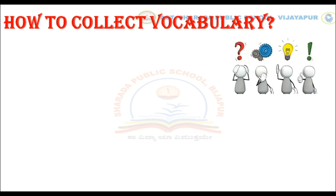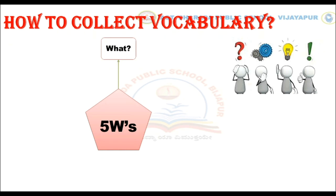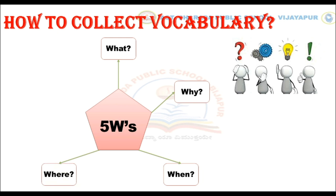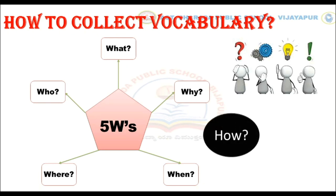How to collect vocabulary? To collect vocabulary we need to think around the theme on several parameters. Some of them are the 5Ws and 1H. So students, on the theme of teamwork, we can think about: what is teamwork, why teamwork is required, when teamwork is essential, where you can see teamwork, who can be a good team member, and how teamwork actually creates a difference.